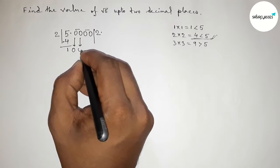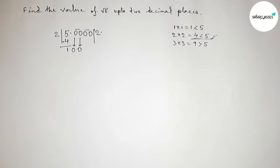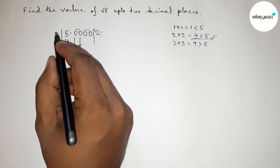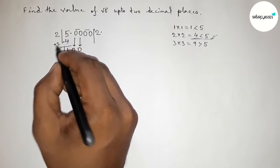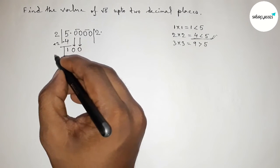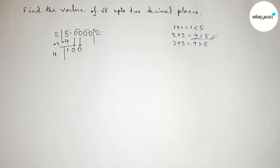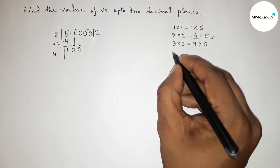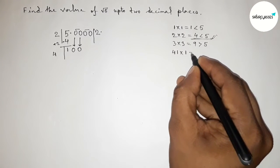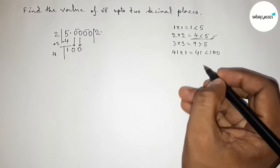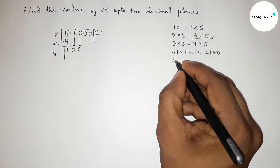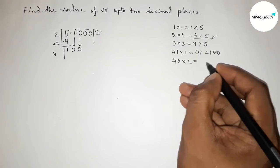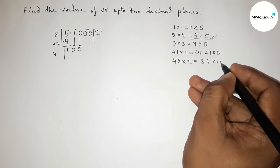Bring down the first pair of zeros, giving 100. Draw a division line. Now for the next step, take the current quotient digit 2 and add it to itself: 2+2=4. We now need a digit beside 4 and multiply 4_×_ by that same digit. If we take 1, then 41×1=41, which is less than 100. If we take 2, then 42×2=84, which is less than 100.